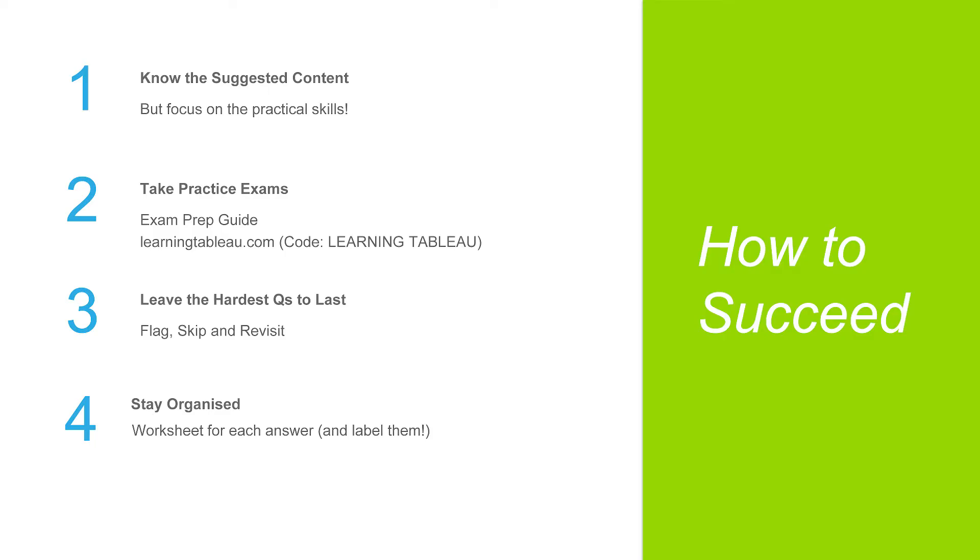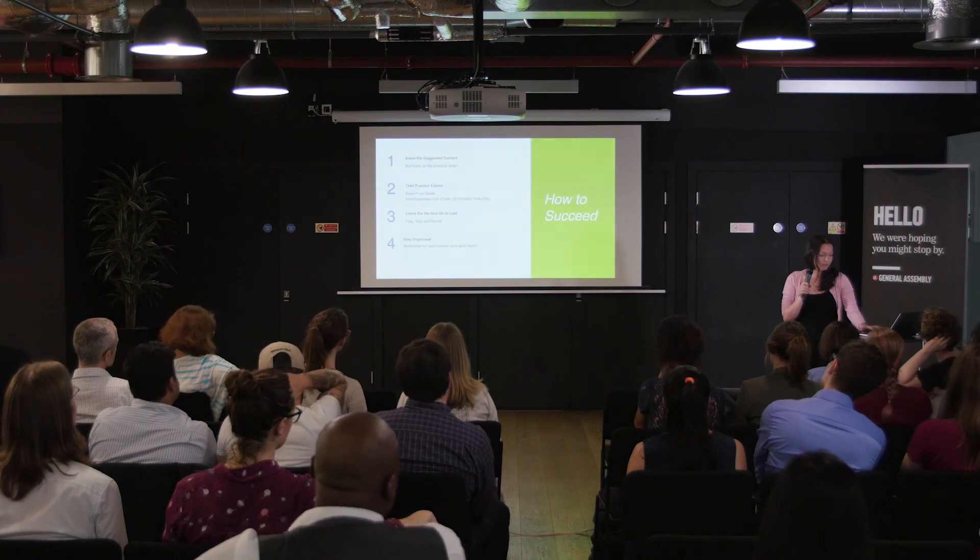As I mentioned, leave the hardest questions to last. I get very bad anxiety when I do exams and I needed a bit of time to go, okay, I can do this. So always do the easy ones first. My last tip is to stay organized. I think I used about five different data sources in the exam, so I had a different workbook for each data source. You go back to them — you'll start with one and then maybe at question 14 you'll have to go back to the one you used first. Make sure you don't delete anything; make a new worksheet for every question, label it, because you can always come back and check your answers. Now, get qualified. Thank you so much.